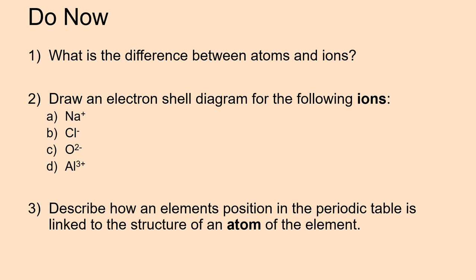The next bit was to describe how an element's position in the periodic table is linked to the structure of an atom of the element. We know that if the group number is 3, the atom of that element will have 3 electrons in its outer shell. So we can say that the group number tells us how many electrons are in that atom's outer shell for part 3.